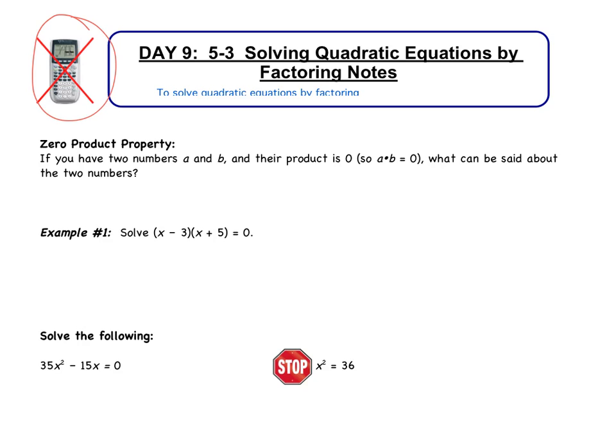The first thing that we're going to talk about is the zero product property. If you have two numbers, a and b, and their product is zero, so that means if I multiply them I get zero, what can be said about the two numbers? Well, that means that either a is zero, or b is zero.